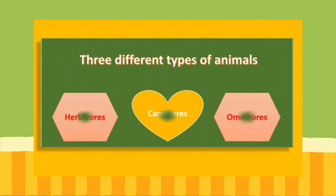Now we are going to look at the three different types of animals — the three different types of feeders that exist. There are three different types: herbivores, carnivores, and omnivores.